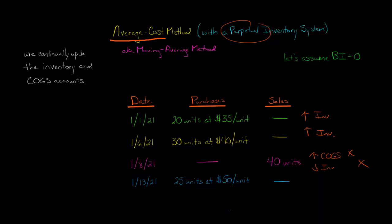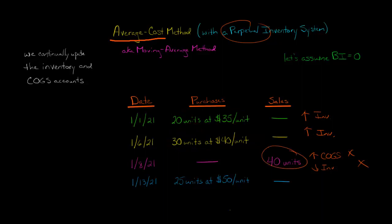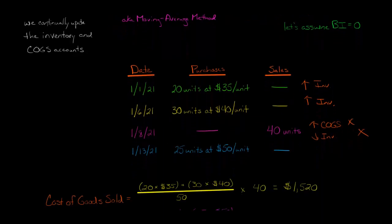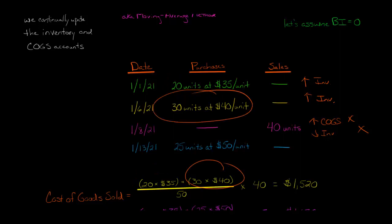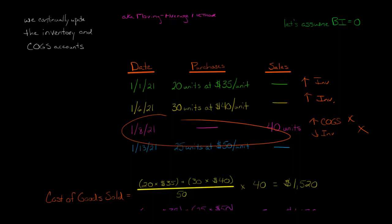What we're going to need to do is come up with the average cost. You had 20 units bought at $35 a unit and 30 units at $40 a unit. We come up with the average cost and then multiply that by 40 units, and that will give us the cost of goods sold. So take 20 × $35 = $700, plus 30 × $40, and divide it by 50 — because we bought 50 units of inventory up until this point.